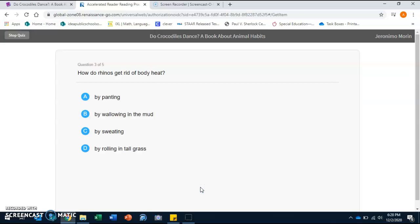Question number three: How do rhinos get rid of body heat? A: by panting, B: by wallowing in the mud, C: by sweating, or D: by rolling in tall grass. B: by wallowing in the mud.